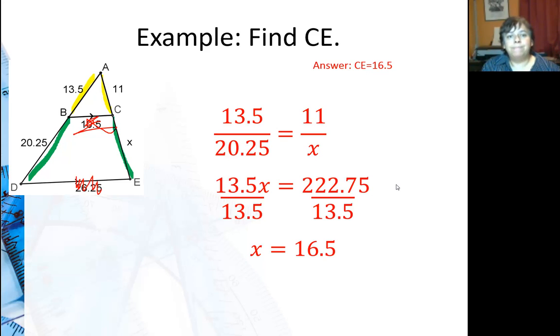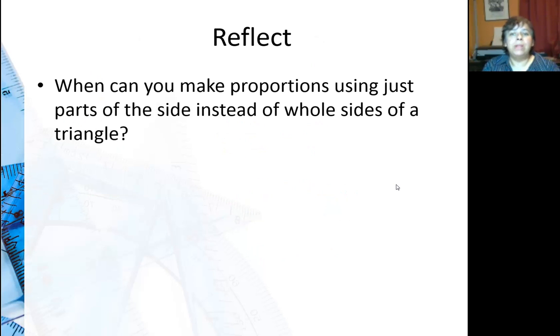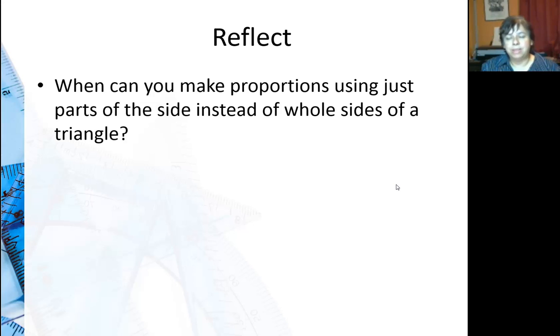So for further reflection, when can you make proportions using just parts of the side instead of whole sides of the triangle? Well basically when we had a triangle and we had a transversal that was parallel to the base. That's called the triangle proportionality theorem. And what would be the converse of the triangle proportionality theorem? Triangle proportionality theorem says that if the line is parallel to the base it cuts these sides proportionally. So the converse you just switch the order: if it cuts the sides proportionally then that line must be parallel to the base.